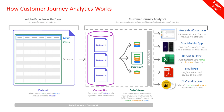AEP can ingest data from multiple sources in order to help you better understand the behavior of your customers. There are multiple ways in which we can ingest data as well as how that data is persisted within the data lake for use by other applications such as CJA, RTCDP, and others. There are three main ways to ingest data: batch ingestion, real-time data through streaming ingestion, or through various source connectors like S3, Marketo, Azure Blob, or Microsoft Dynamics.